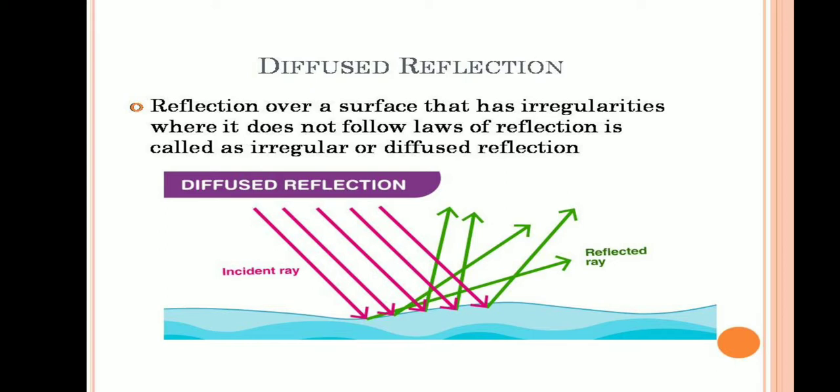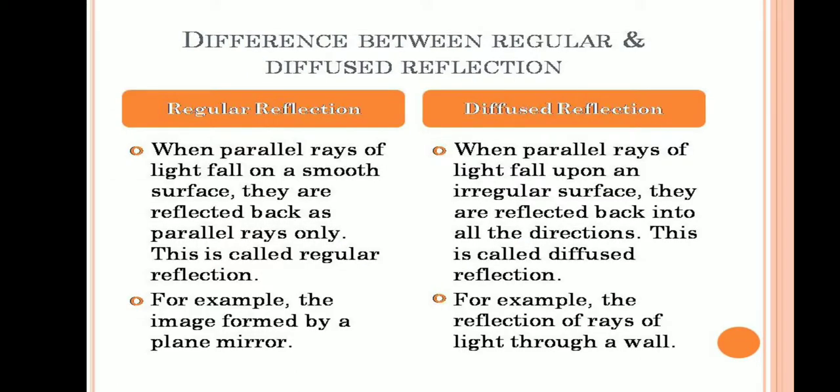In irregular reflection, the incident ray falls on a rough surface. The surface has lots of irregularities on it, so the reflected ray will not be parallel. This type of reflection is known as diffused reflection. The other name of irregular reflection is diffused reflection.